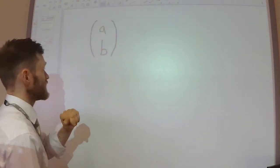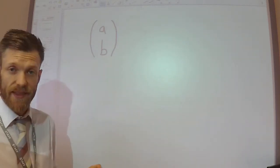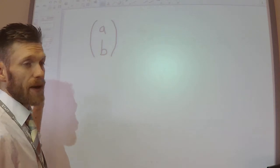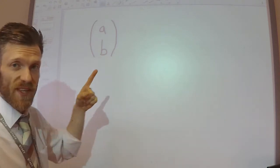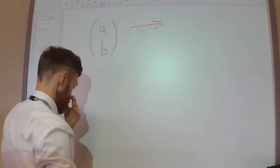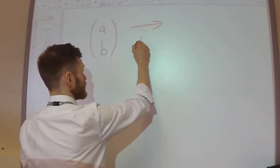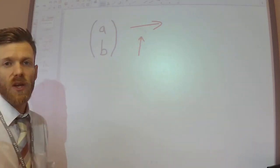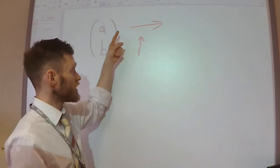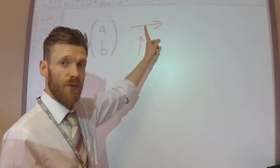You should remember from GCSE that a vector can be written like this, where the number at the top says how many squares you're moving in the positive x direction, and the number at the bottom says how many squares you're moving in the positive y direction. Alternatively, you could think of it as this is to the east and this is to the north.